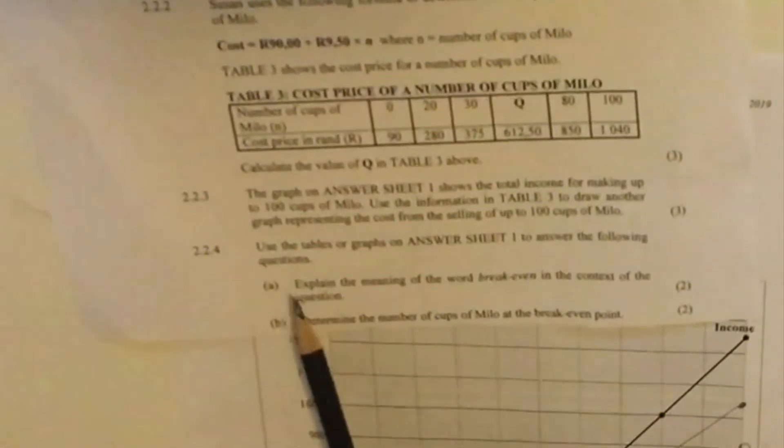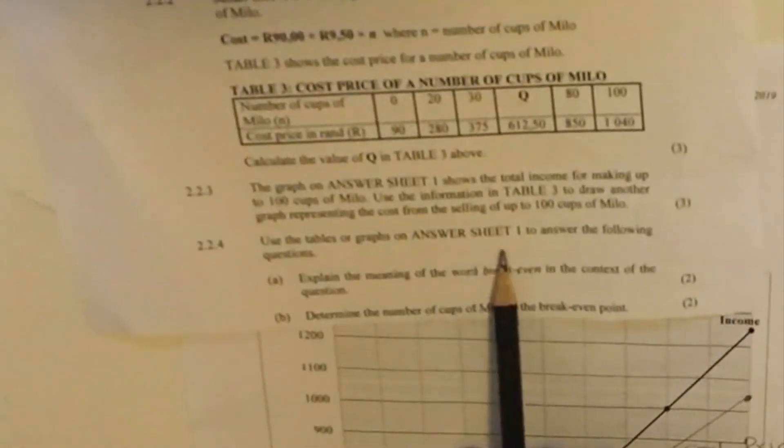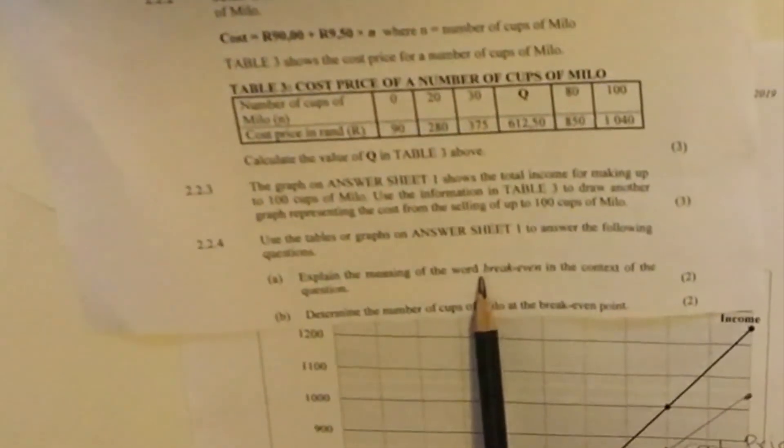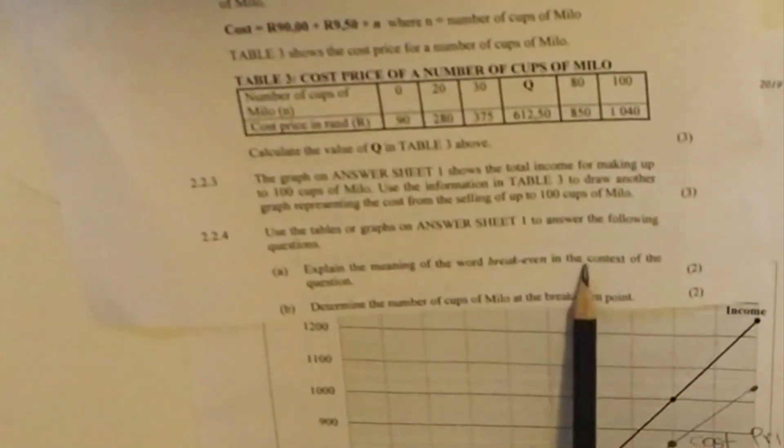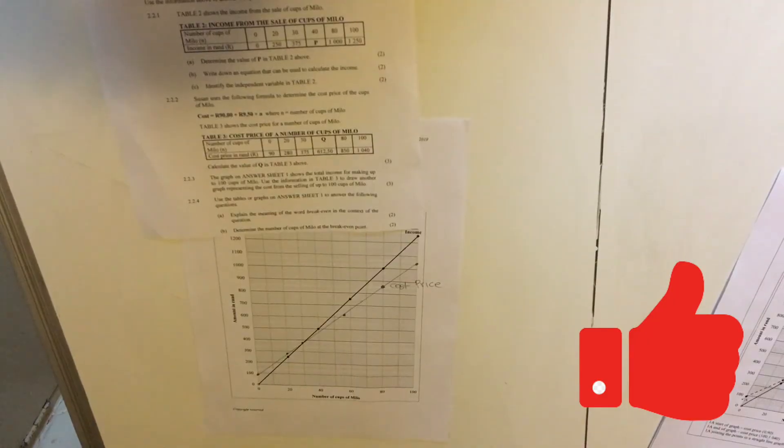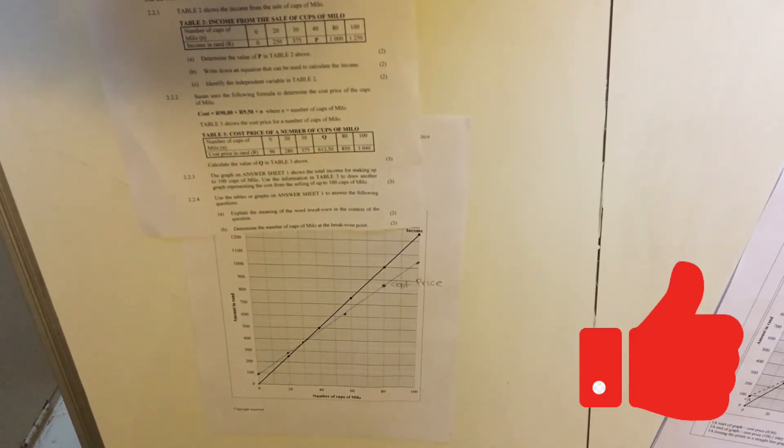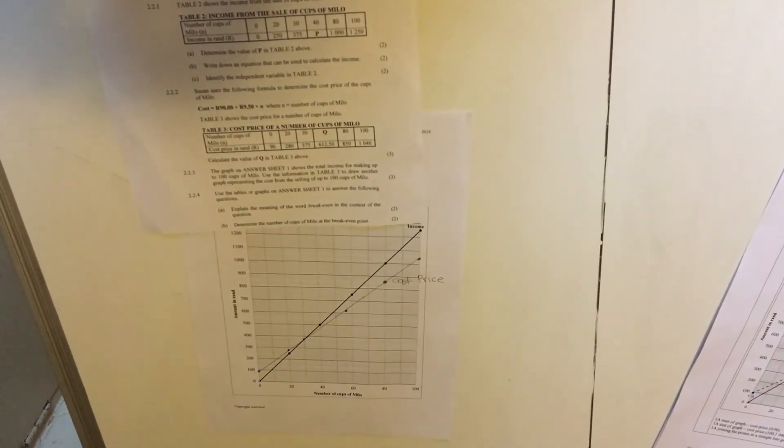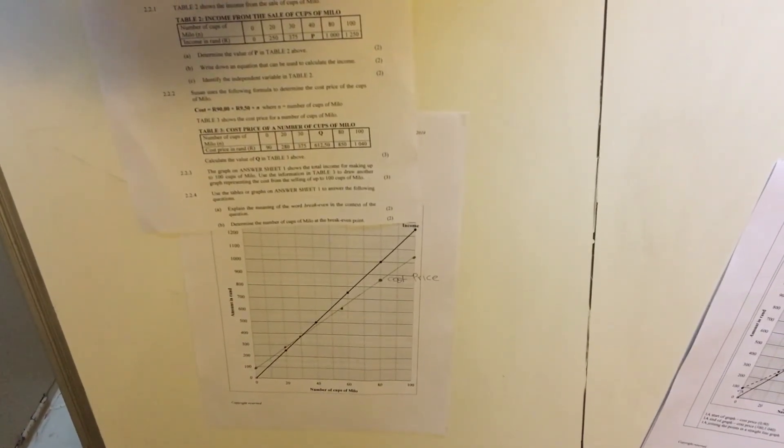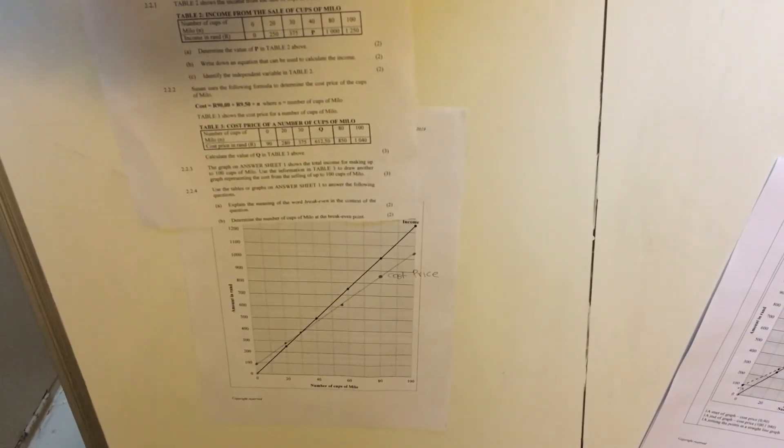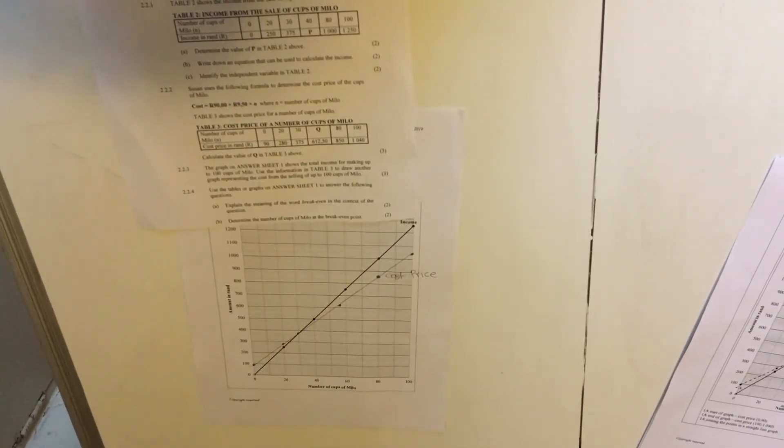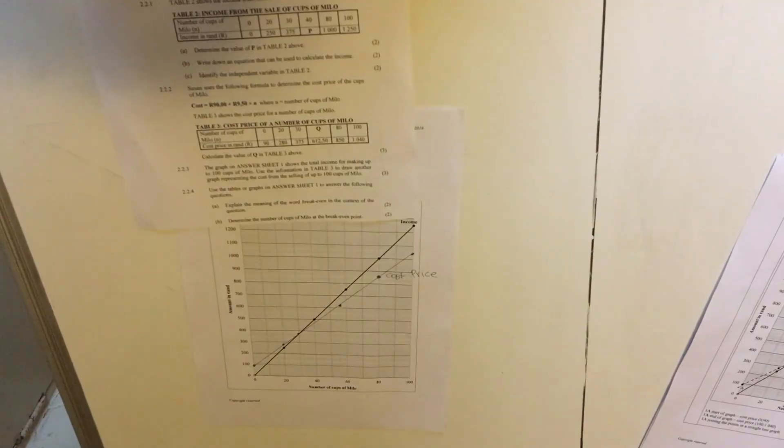And then this next question, they say, use the graph, the answer sheet one to answer the following question. Explain the meaning of the word break even in the context of the question. In the context of this question is that the number of milos that are produced, the amount of producing or the cost price of milos will be equal to the income. At that point where the cost price is equal to the income, that's your break even point.